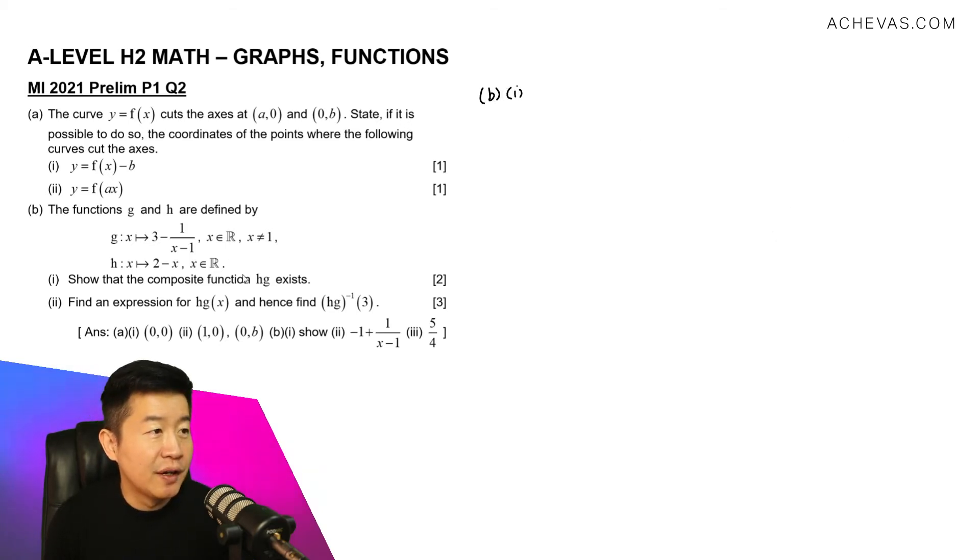In part B(1), we are supposed to show that the composite function hG exists. So I'm going to make use of the same schematic that I've always been using on Achievers TV and all the videos that we have been producing. So hG, I'm going to represent it using my schematic here where x first goes into g, then after that it is going to go into h.